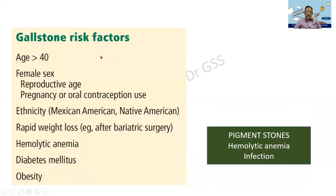What are the risk factors for gallstones? Age 40. Normally it is mentioned as fat, fertile, female of 40. Pregnancy or oral contraceptive use can be there. More common in certain countries such as Mexican-Americans. Rapid weight loss after bariatric surgery can also lead to gallstones. Hemolytic anemia and infections — keep in mind for pigment stones. Diabetes mellitus, obesity. Fat, fertile, female of 40 is usually given as a history.